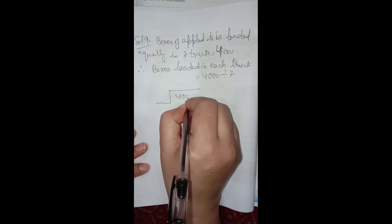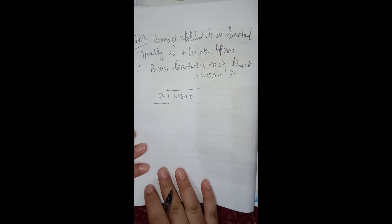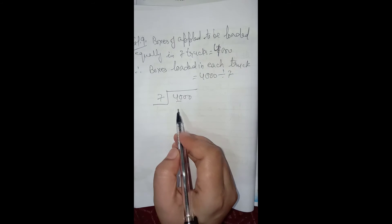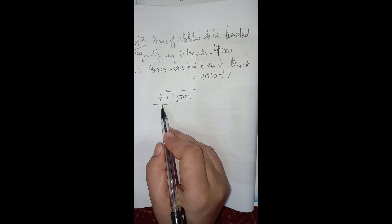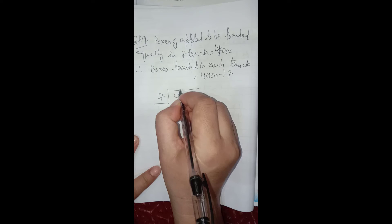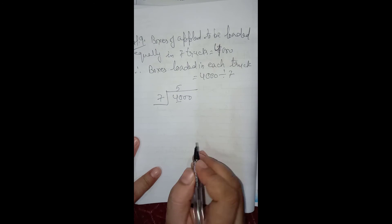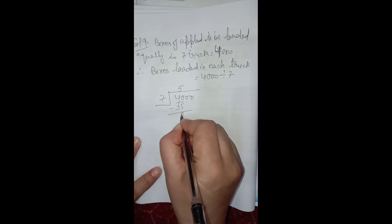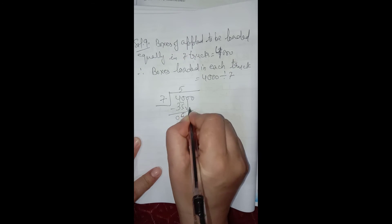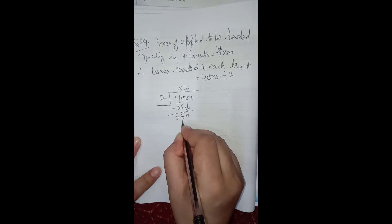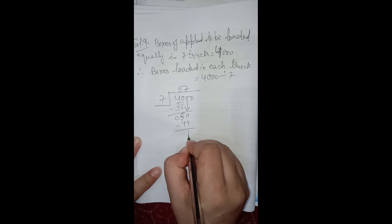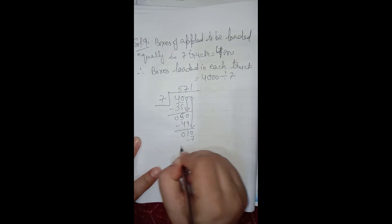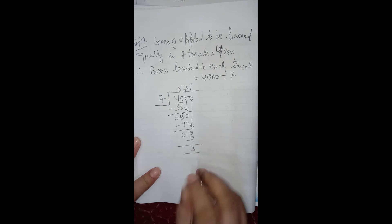Let us divide 4000 by 7. We take 2 digits from the dividend since 1 digit would be less than the divisor. 7 fives are 35, and 7 sixes are 42 which is greater, so we use 7 fives are 35. After subtracting we get 5 as the remainder. Bringing down 0, 7 sevens are 49, and 50 minus 49 gives 1. Bringing down 0, 7 ones are 7, and 10 minus 7 gives 3.